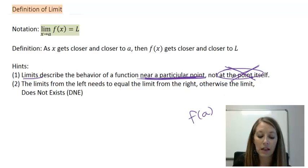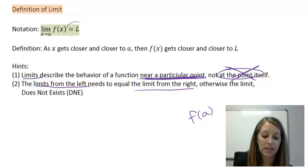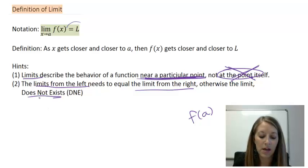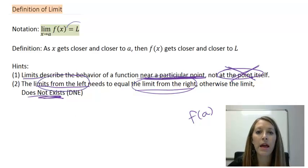The preface into one-sided limits is: if the limit from the left equals the limit from the right, then that limit exists and it is equal to L. If the limit from the left does not equal the limit from the right, then the limit does not exist. That is exactly what a one-sided limit is.